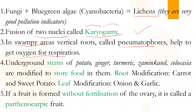Underground stems are modified to store food — examples are potato, ginger, turmeric, zaminkand, and colocasia. For root modifications, look at carrot and sweet potato especially. For leaf modifications, that is onion and garlic — you can remember that they have layers, like leaves spread one over the other covering each other.